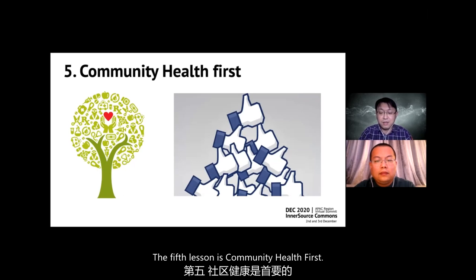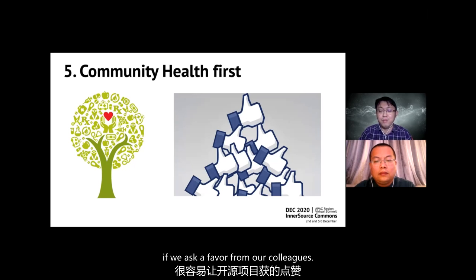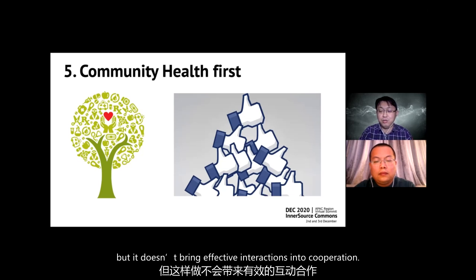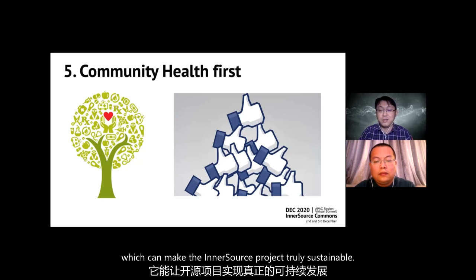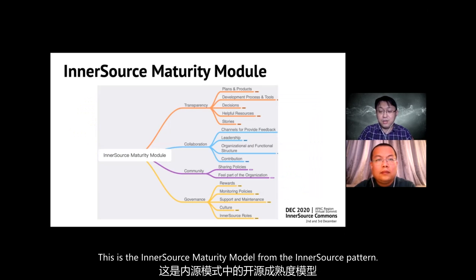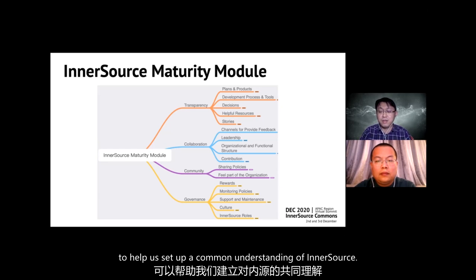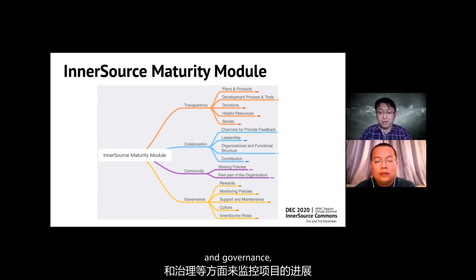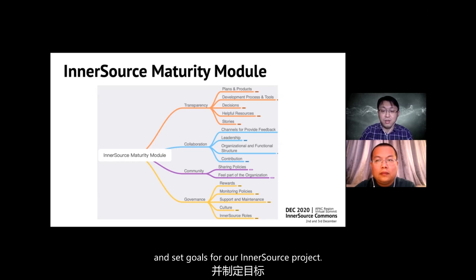The fifth lesson is community health first. It's easy to get sign-ups for an InnerSource project if we ask a favor from colleagues, and we may be happy about the numbers — but it doesn't bring effective interactions or cooperation. We need to think about the metrics that can make InnerSource projects truly sustainable. The InnerSource maturity model from InnerSource patterns is a very useful tool to help us set up a common understanding of InnerSource. We can monitor project status by levels of transparency, collaboration, community health, and governance, conduct self-assessments, and set goals for our InnerSource projects.